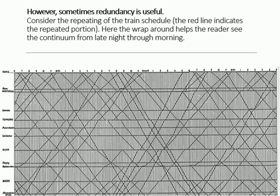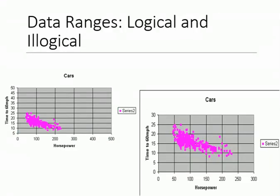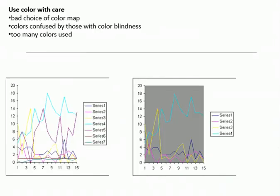Sometimes redundancy is useful. For example, with the train schedule, when we removed the background under the data-ink ratio principle, the author noted that the background helped readers understand which trains go to which stations and provided continuity from late night to morning. So redundancy can be useful or harmful depending on context. I have some examples here — you can comment on which visualizations are logical versus illogical.